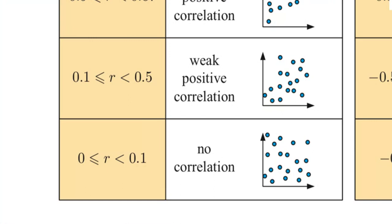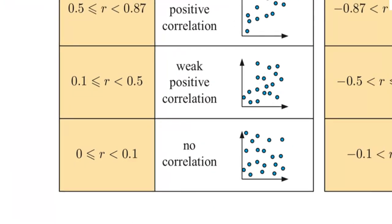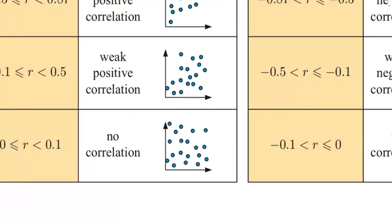And really, I mean, it's a good discussion point as to when we say there's no correlation, right? In this example, it's between zero and 0.1, but that's up for debate.